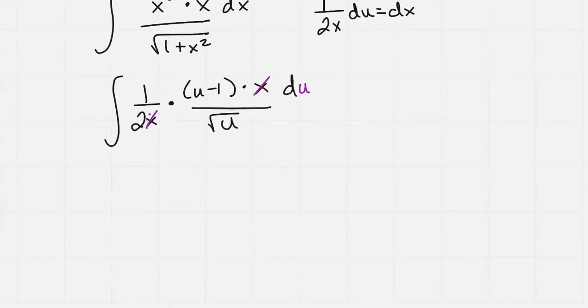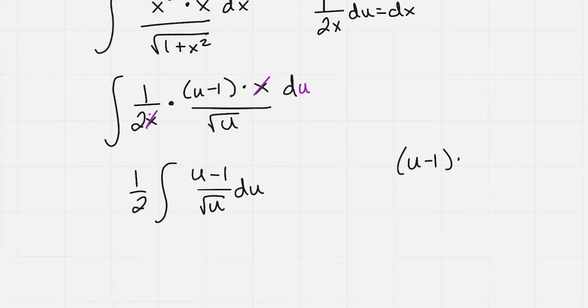Everything's all set. Now that 1 half, I'm going to pull that all the way out front. So 1 half times the integral of u minus 1 all over the square root of u, du. I'm going to look at this as u minus 1 times u to the negative 1 half, because if I could separate this out, this would be very nice.